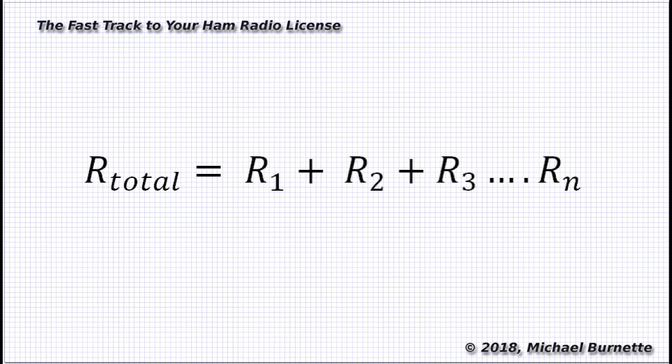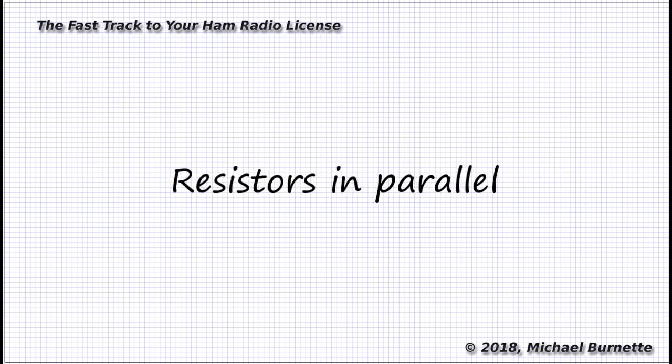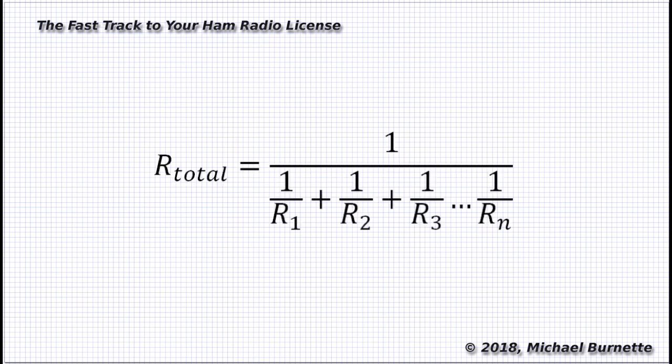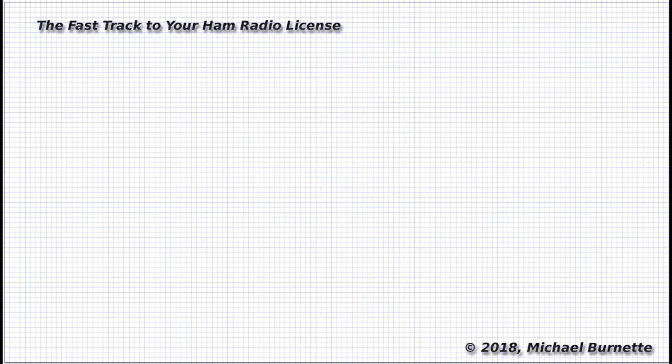How about resistors in parallel? Now that's where things get a little strange. Here's the formula for resistance in parallel. R total equals one over one over R1 plus one over R2 plus one over R3, etcetera, etcetera, until you run out of resistors. Now let's try one with a couple of resistors.